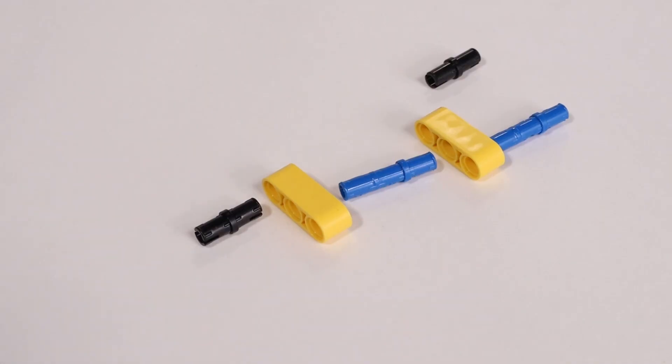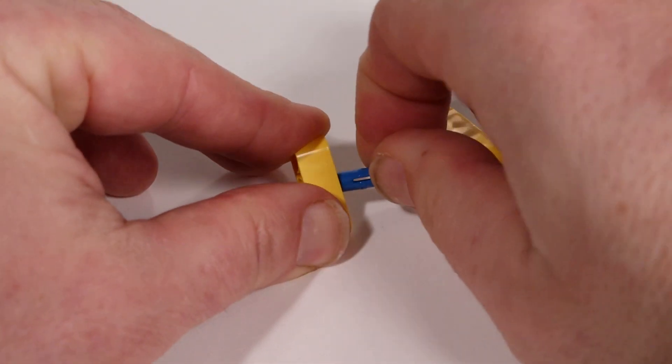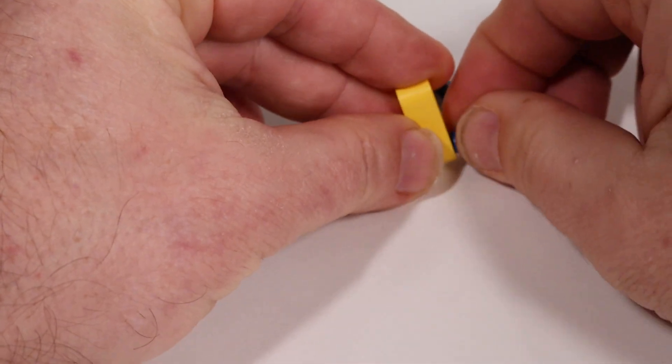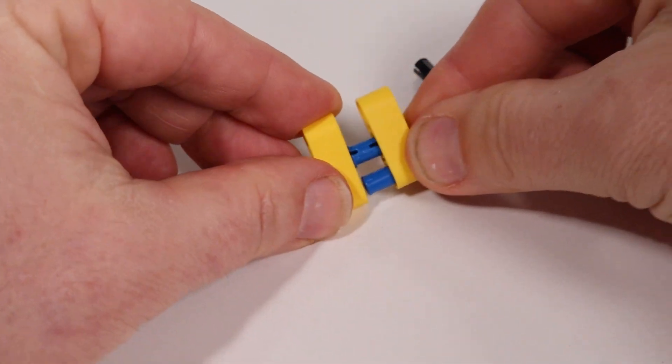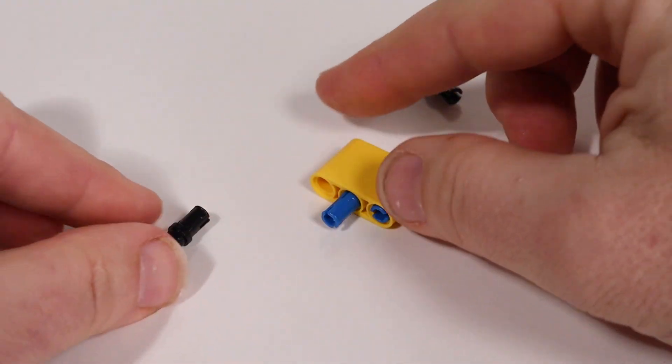Now we'll assemble the outside beam connectors. Take two of the three hole long beams and connect them together with two of the long blue pins. Do this so that one of the pins is sticking out from the middle and the other is sticking out from one of the ends.